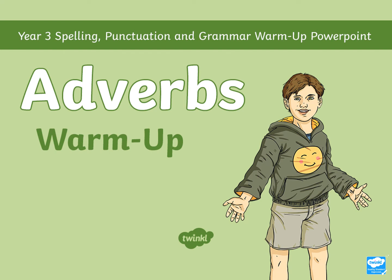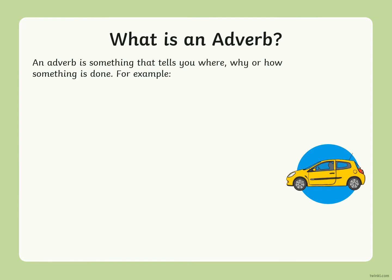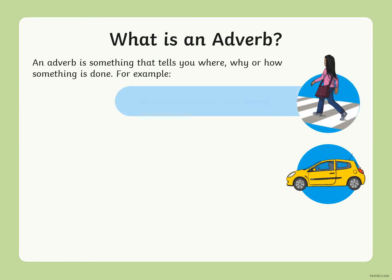Today our grammar lesson is adverbs. We've spent some time looking at verbs, nouns, adjectives, and so on, and two weeks ago we did a little bit on verbs and adverbs, so we're going to look at adverbs a little bit more fully. An adverb tells you where, why, or how something is done — it's a describing word that describes a verb. For example: Camilla crossed the road safely. 'Safely' is the adverb.